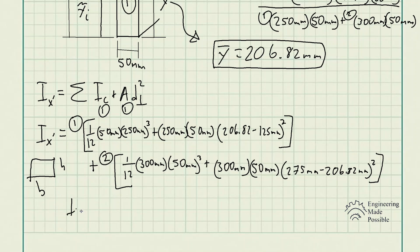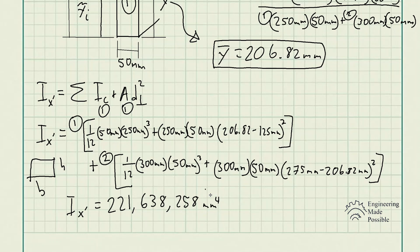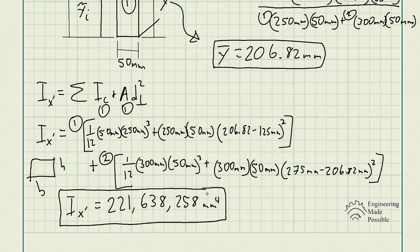Multiplying everything out and adding it together, we finally solve for the area moment of inertia of this T-beam and get 221,638,258 millimeters to the fourth power. It's a large number, but we are dealing with millimeters to the fourth.